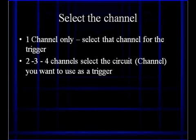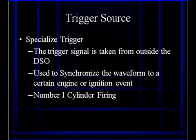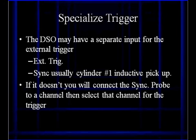If you've got only one channel, you have to select that channel. If you've got more channels, select the channel that will give you a good stable trigger, understanding the rules we've outlined. Sometimes you're going to use specialized triggering. The trigger signal can be taken from outside the DSO, used to synchronize the waveform to a certain engine or event timing — for example, number one cylinder firing with an inductive pickup. The DSO may have a separate input for an external trigger, or a sync trigger usually called number one inductive pickup. If it doesn't, you will have to connect the sync probe to a channel and then select that channel as a trigger.